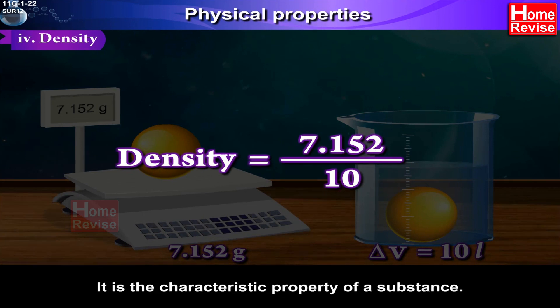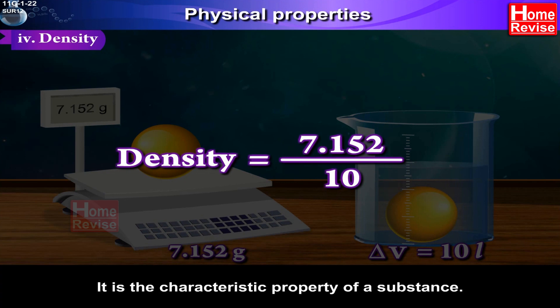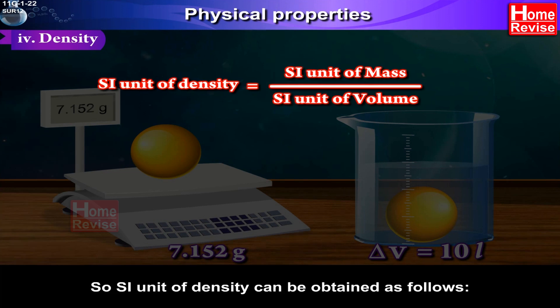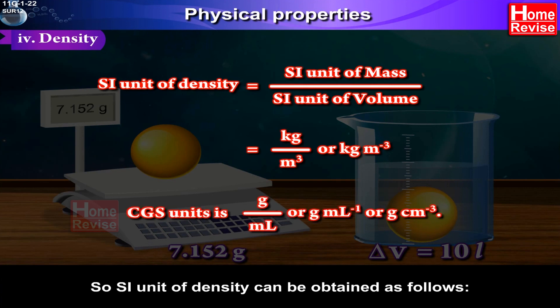It is the characteristic property of a substance. So SI unit of density can be obtained as follows: SI unit of density is equal to SI unit of mass upon SI unit of volume, which is equal to kilogram upon meter cube or kilogram m raised to minus 3. CGS units is gram upon milliliter or g mL raised to minus 1 or g cm raised to minus 3.